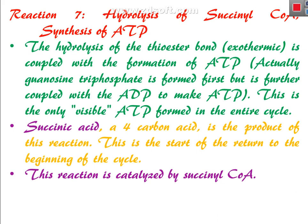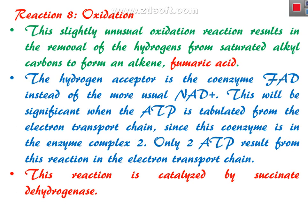Succinic acid, a 4-carbon compound, is the product of reaction 7 and marks the start of the return to the beginning of the cycle. From succinate you get fumarate, then malate, then oxaloacetate, and this oxaloacetate re-enters the new Krebs cycle. This reaction is catalyzed by succinyl coenzyme A synthetase.